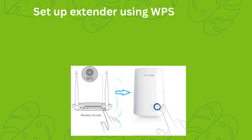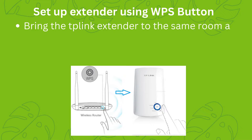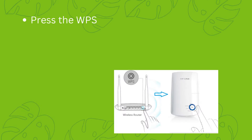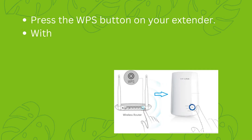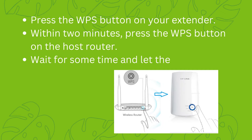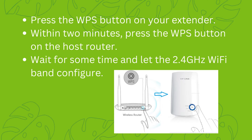Set up the extender using the WPS button. Bring the TP-Link extender to the same room as the host router. Turn on the router and the extender. Press the WPS button on your extender, and within 2 minutes, press the WPS button on the host router. Wait for some time and let the 2.4 GHz Wi-Fi band configure.